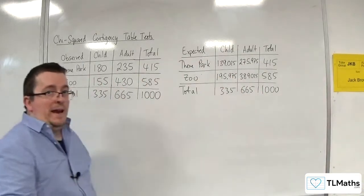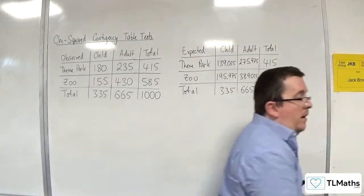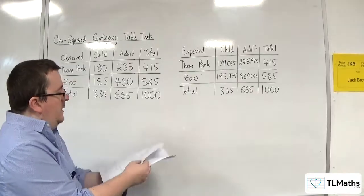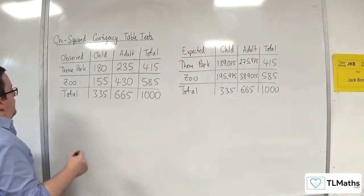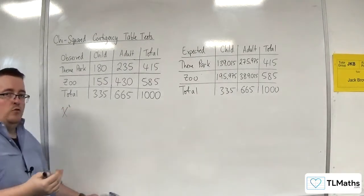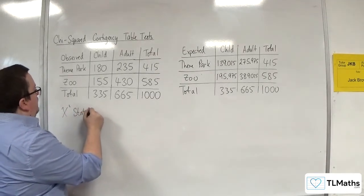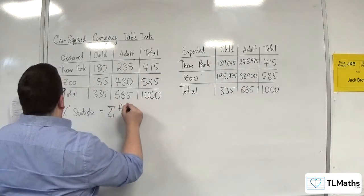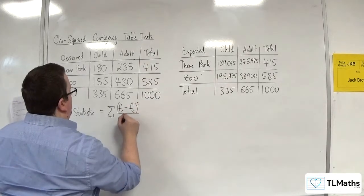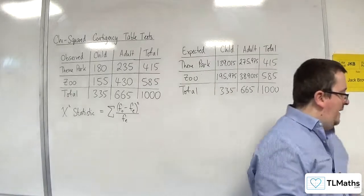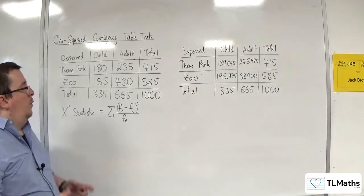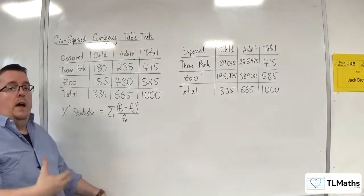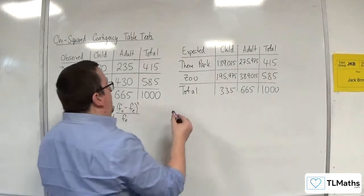So now we need some way of comparing the two. So this is where we bring in the chi-squared statistic. Now, the chi-squared statistic is in your formula booklet. It is on page 11, about mid-page. So the chi-squared statistic is equal to the sum of the observed frequencies take away the expected frequencies squared divided by the expected frequencies. However, what we need to do is we need to calculate what each of those are and then add them all together. And this is done within the contributions table. So we refer to these as contributions.